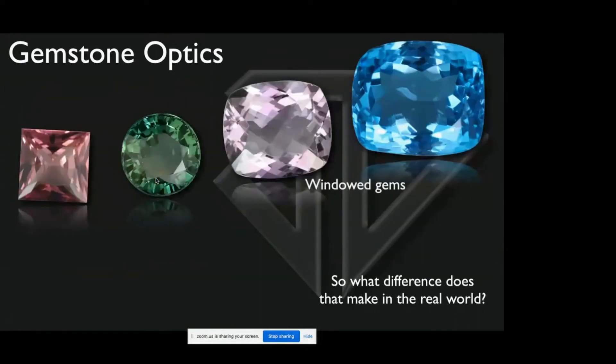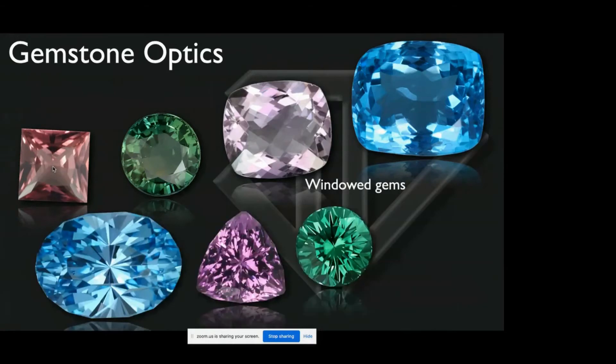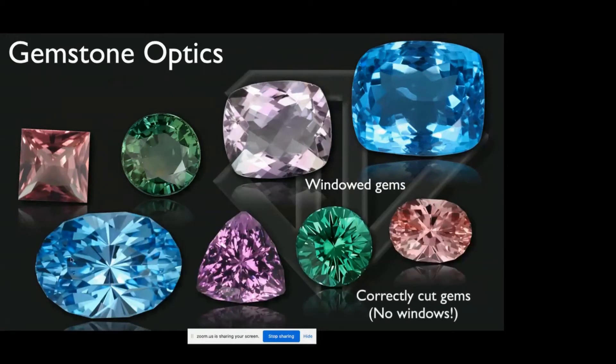Here are windowed gems—blue topaz, amethyst, tourmaline, and pink tourmaline. And these are the exact same materials—blue topaz, amethyst, green tourmaline, pink tourmaline—in well-cut gems. You see the difference that proper optics and good polish can make.